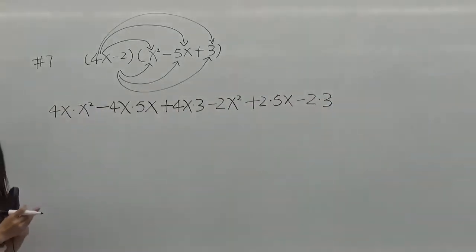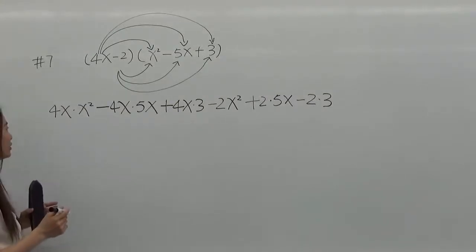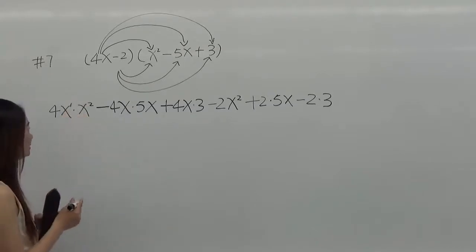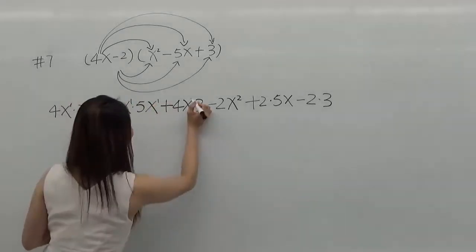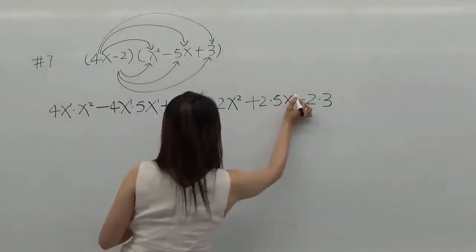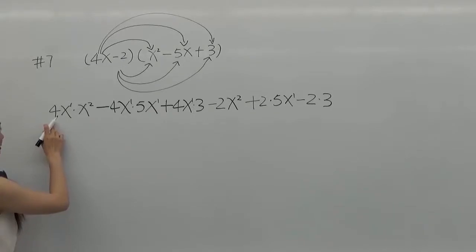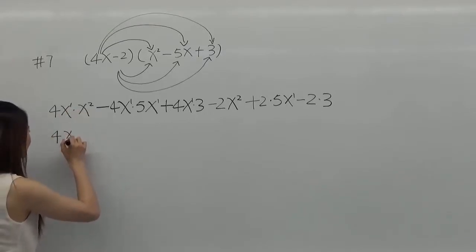The last step we need to calculate. For easy calculation, we need to put the exponent: x to the 1 here and 1 here. First, we need to multiply the coefficients: 4 times 1, it will be 4. We need to add the exponents: 1 plus 2, it will be x cubed.